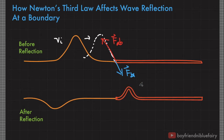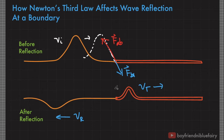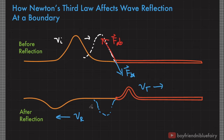Let's designate this as the transmitted wave with velocity V sub T, and this one as the reflected wave with velocity V sub R. What actually happens is that since there is a reaction coming from the heavier string, it actually pulls down some portion of the lighter string in this direction. It's actually pulling it downwards, and the reflected wave propagates in this direction. After some time, it reaches this point.